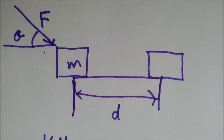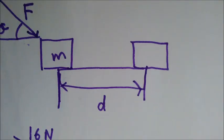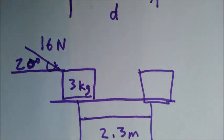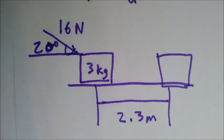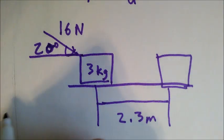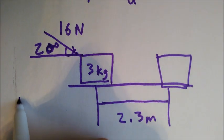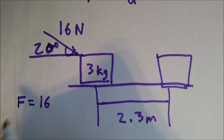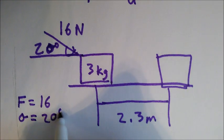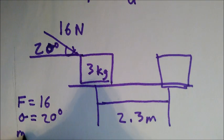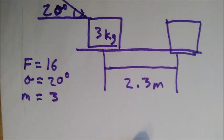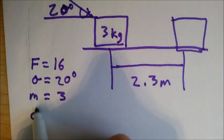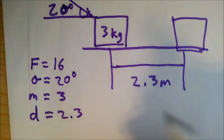This is the picture you can get from the problem. After applying all the force and everything in it, this is the picture. From here, we can see the force we have is 16. The angle is 20 degrees. The mass of the object is 3. And the distance it traveled is 2.3 meters.